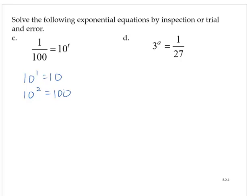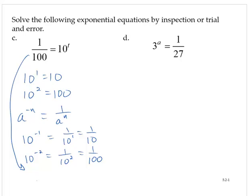So recall, your rules for negative exponents tell you that a to the negative n is equal to 1 over a to the n. So therefore, 10 to the negative first is 1 over 10 to the first, which is 1 over 10. And 10 to the negative second is 1 over 10 to the second, which is 1 over 100. All right, so that's the one that we want. And so then our solution of the equation is t is equal to negative 2.